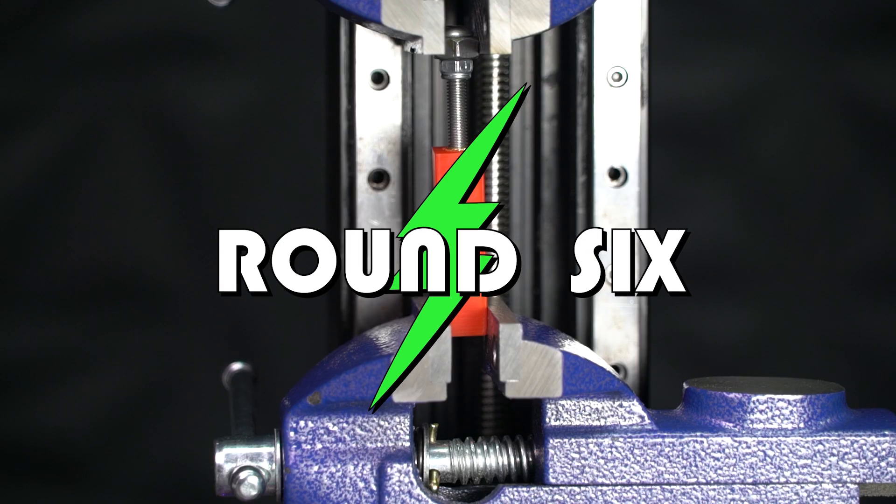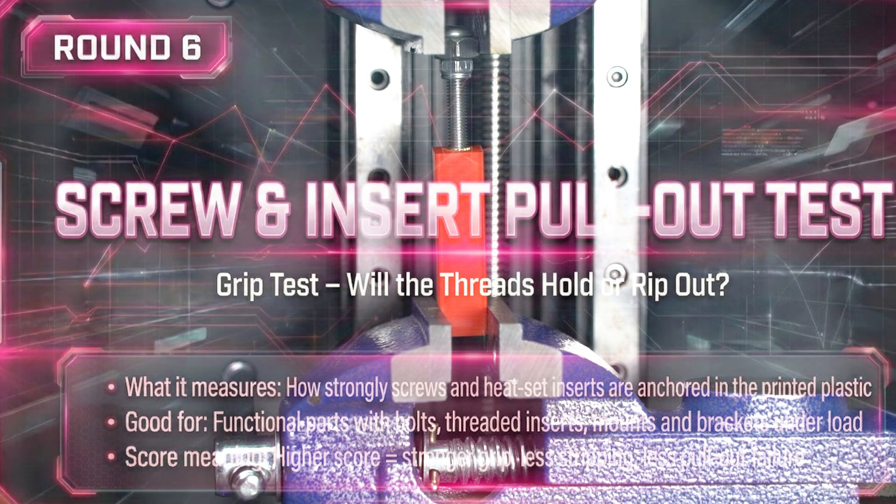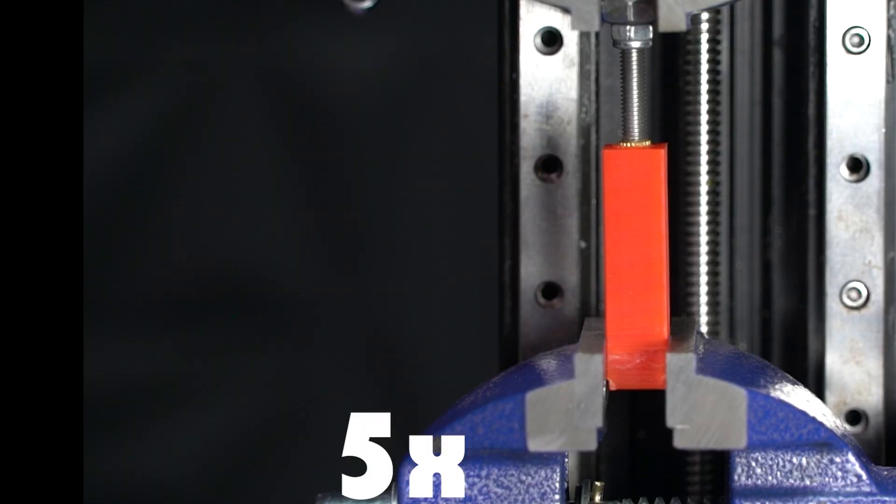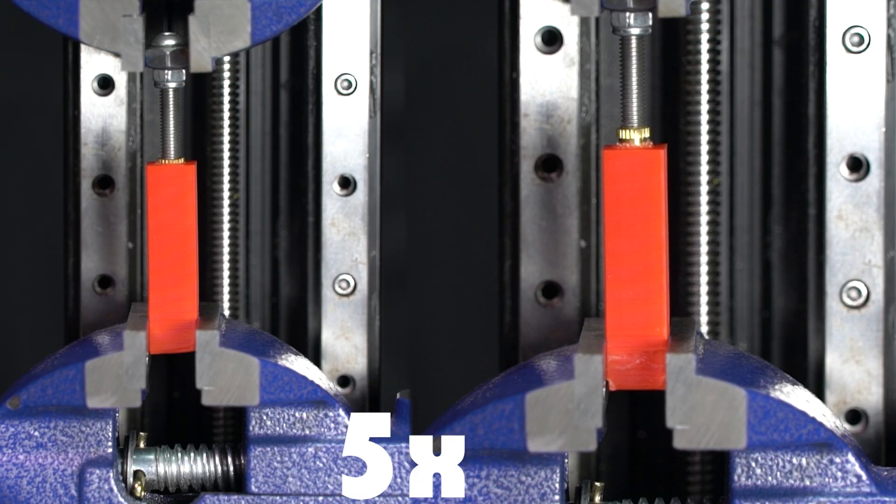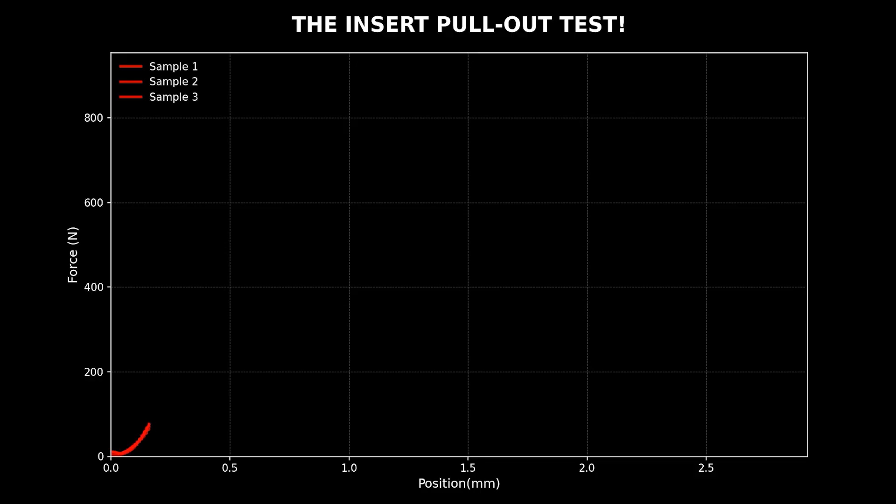Round 6, the insert pullout test. Here we measure the grip strength of our heat set inserts. Let's see who holds on. First up, we start with ABS. Expectations are high for our armored tank. But look at that. The tank couldn't handle the pressure. 866 Newtons. Sadly, it gave up.